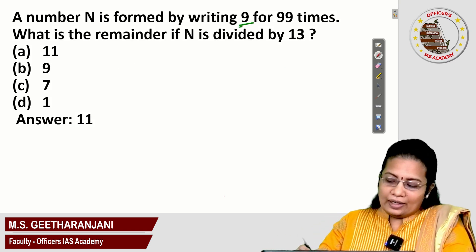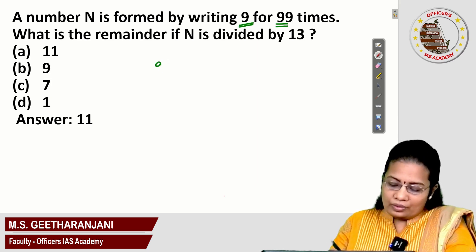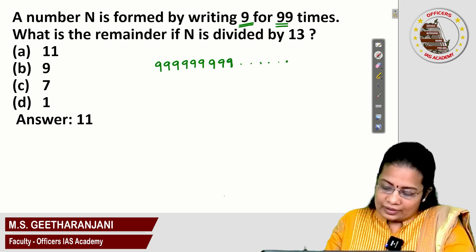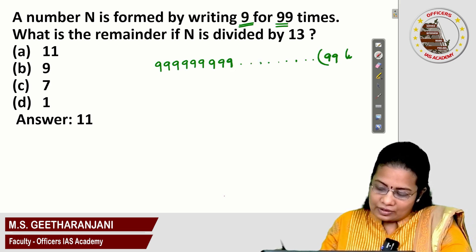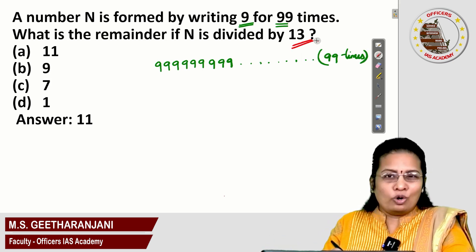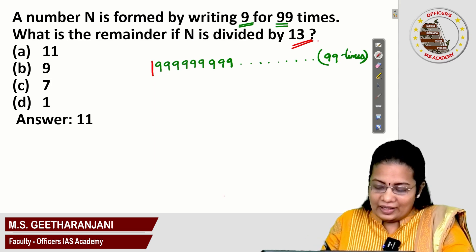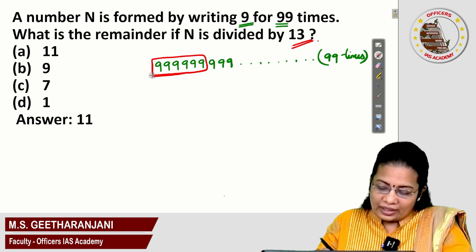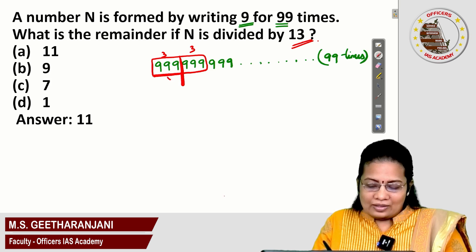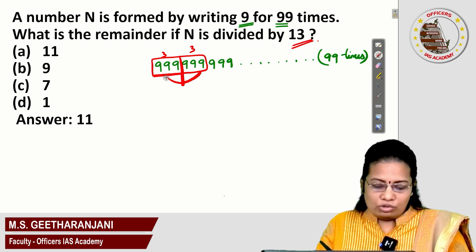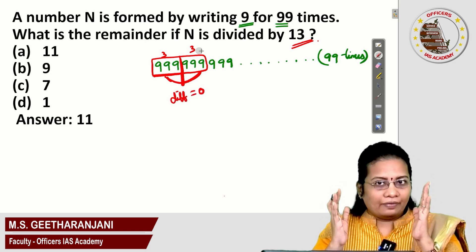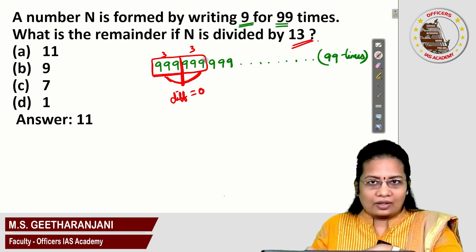Given is writing number 9 for 99 times. So the given number is of the form where 9 is written 99 times. The rule for number 13 deals with any 6-digit number. If you segregate that 6-digit number into two sets of 3 digits, and if the difference between those two sets is 0, then those 6 digits are definitely divisible by 13.